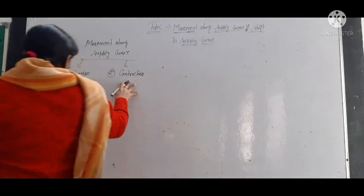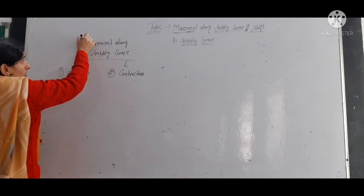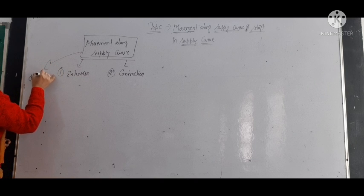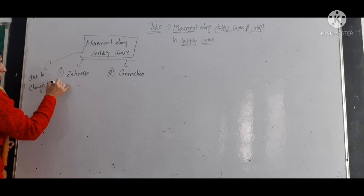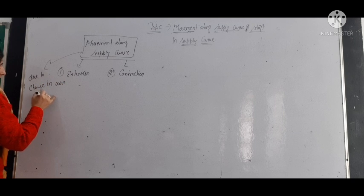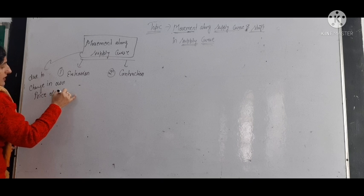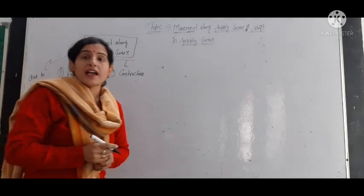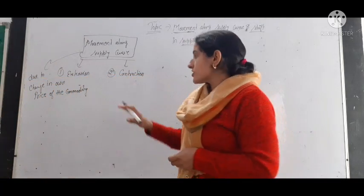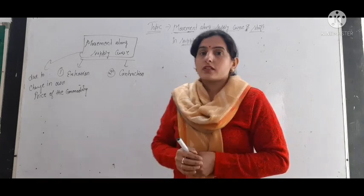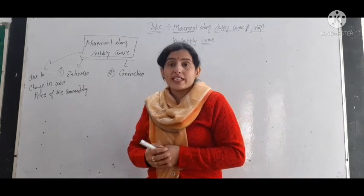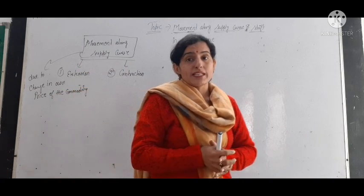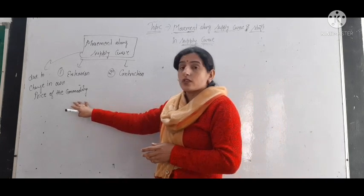Extension and contraction — that is, movement along the supply curve — is due to change in the own price of the commodity. When the own price of the commodity increases, then the quantity supplied also increases. And when the own price of the commodity decreases, then the quantity supplied also decreases.